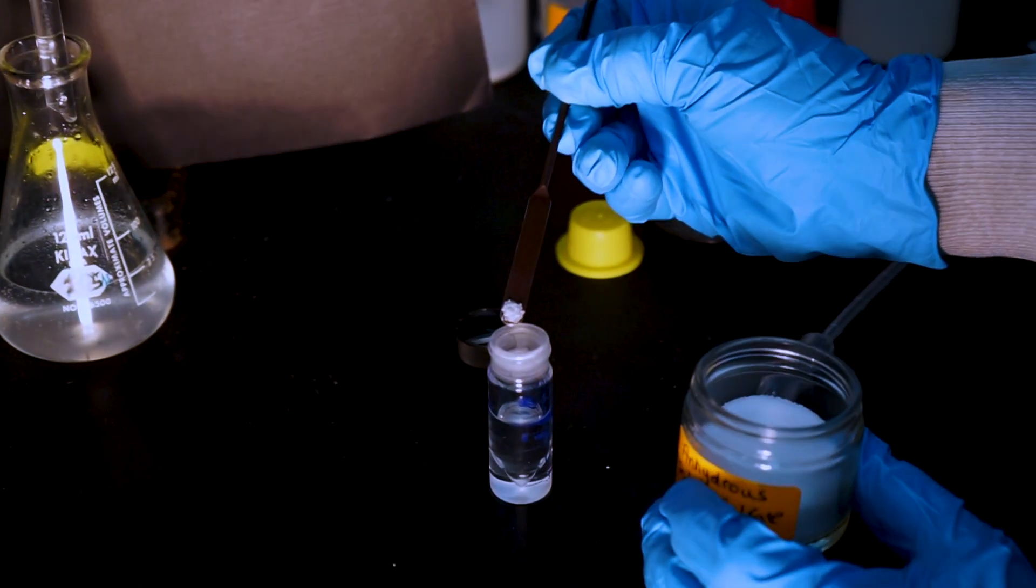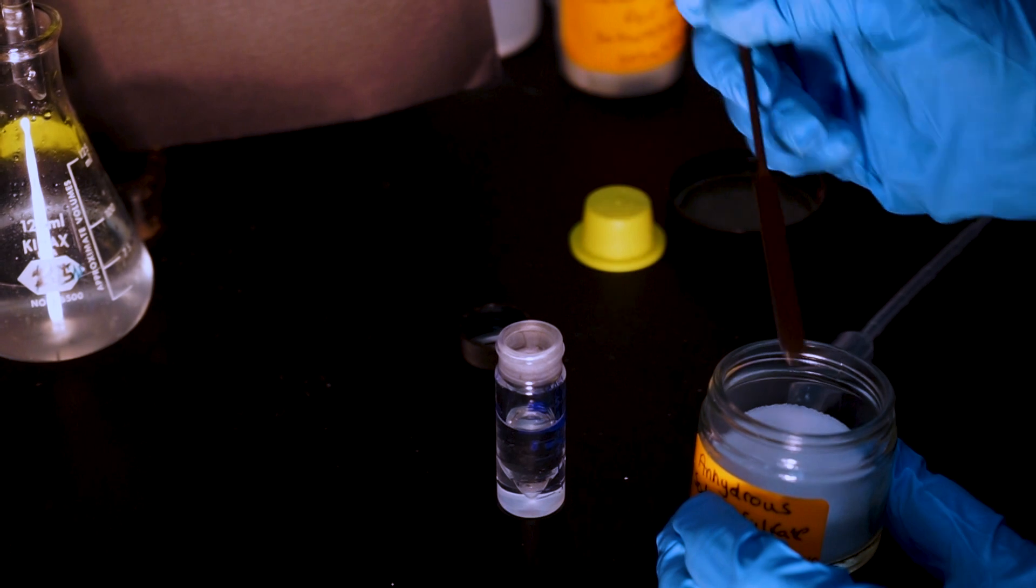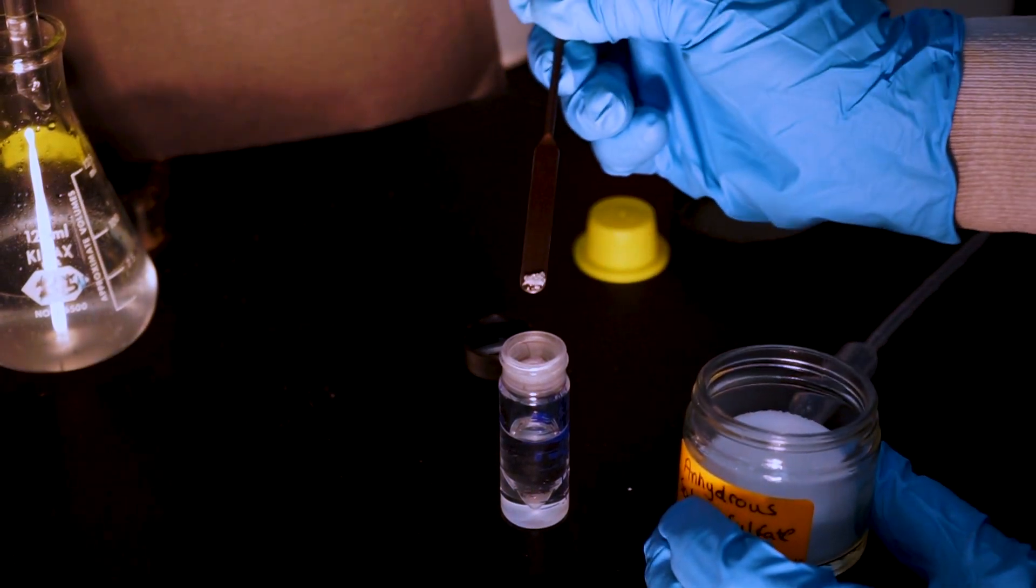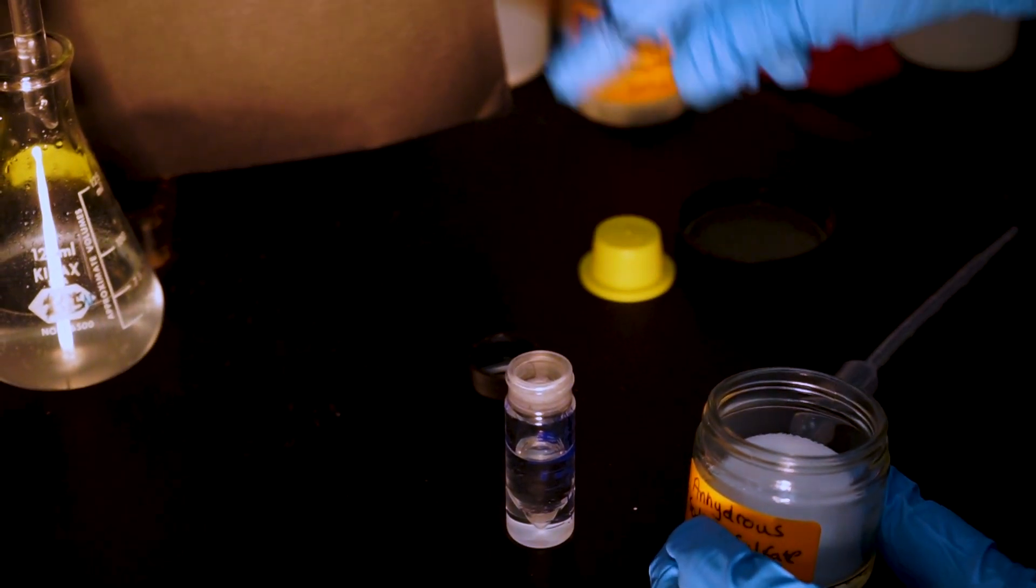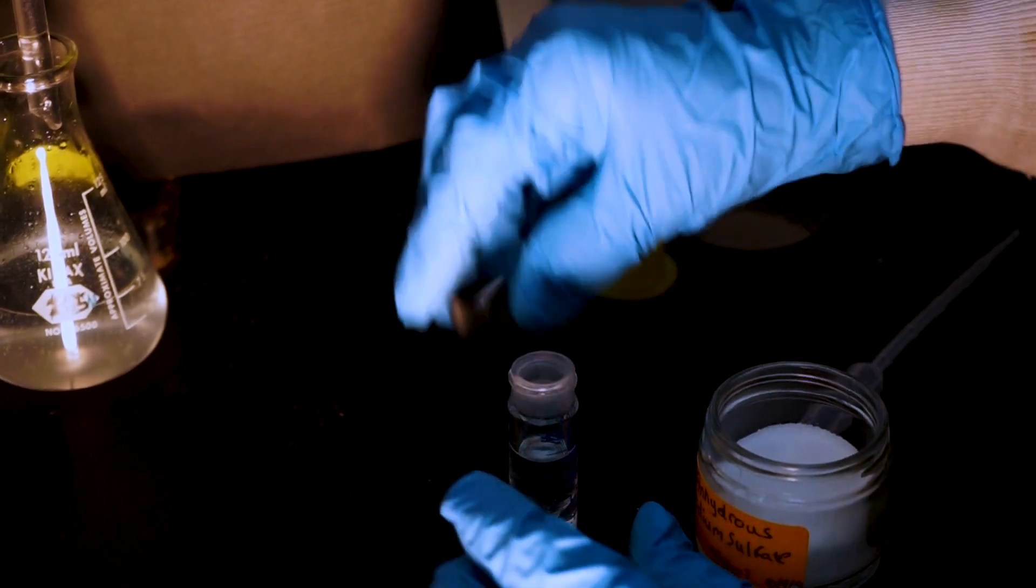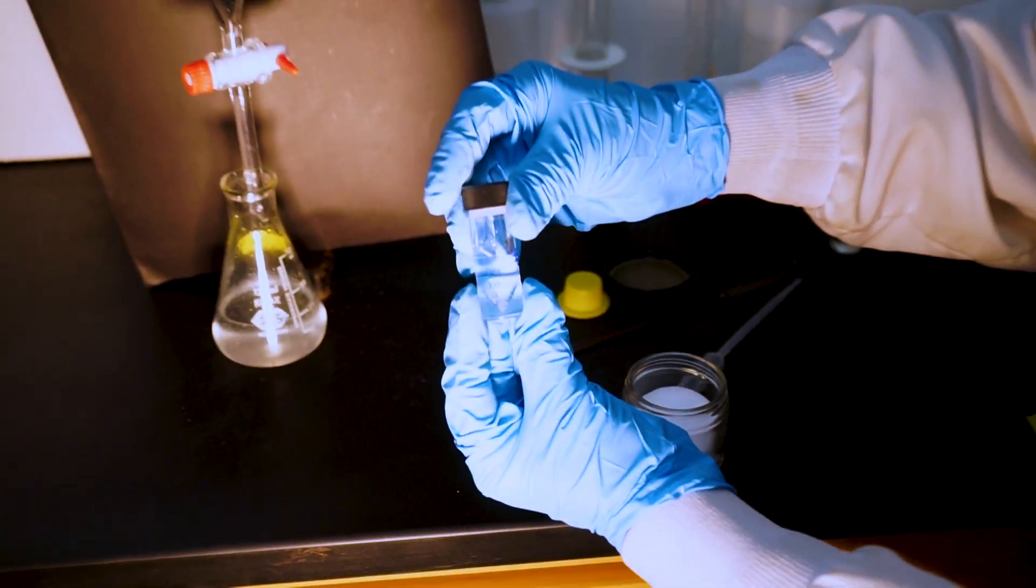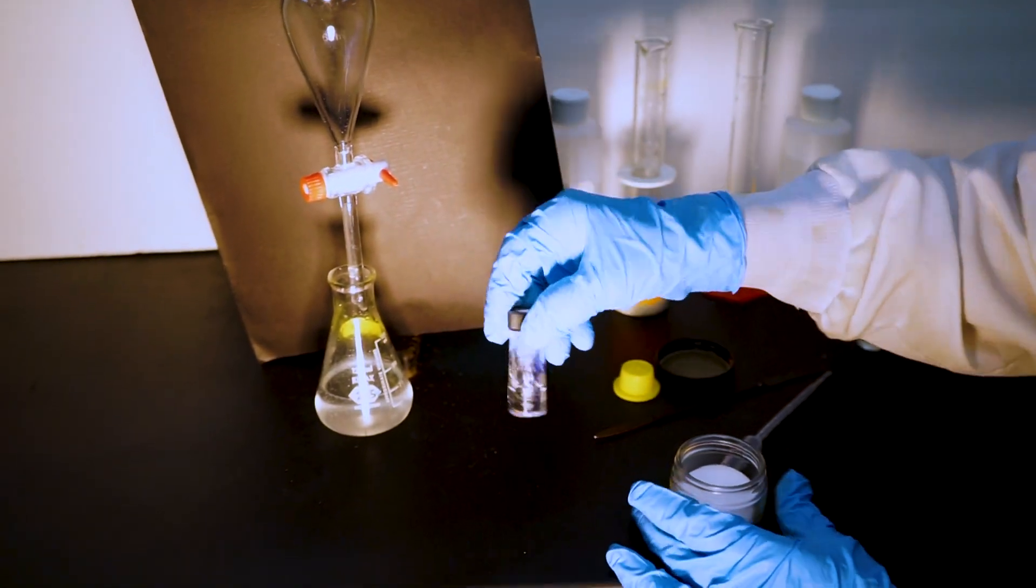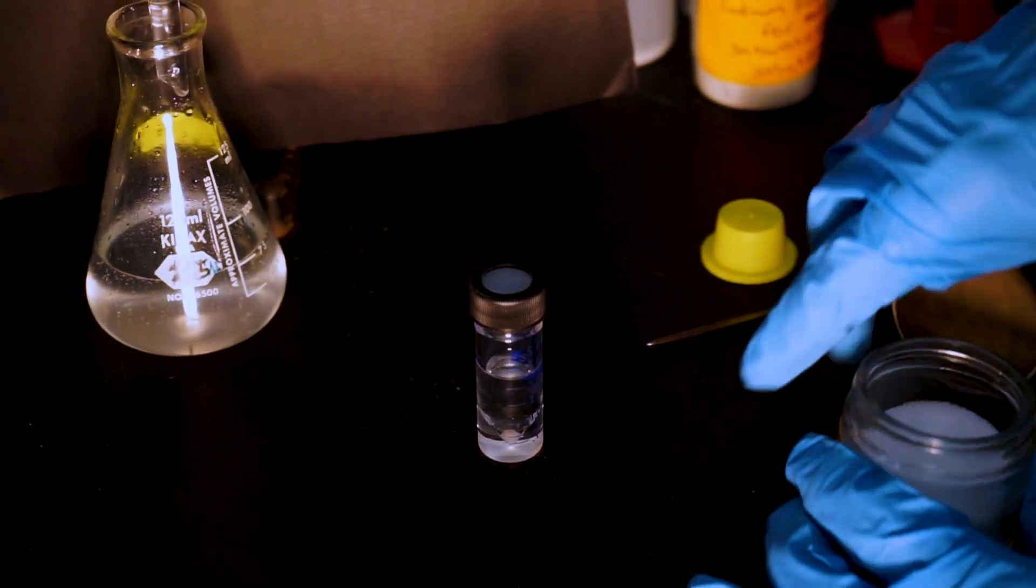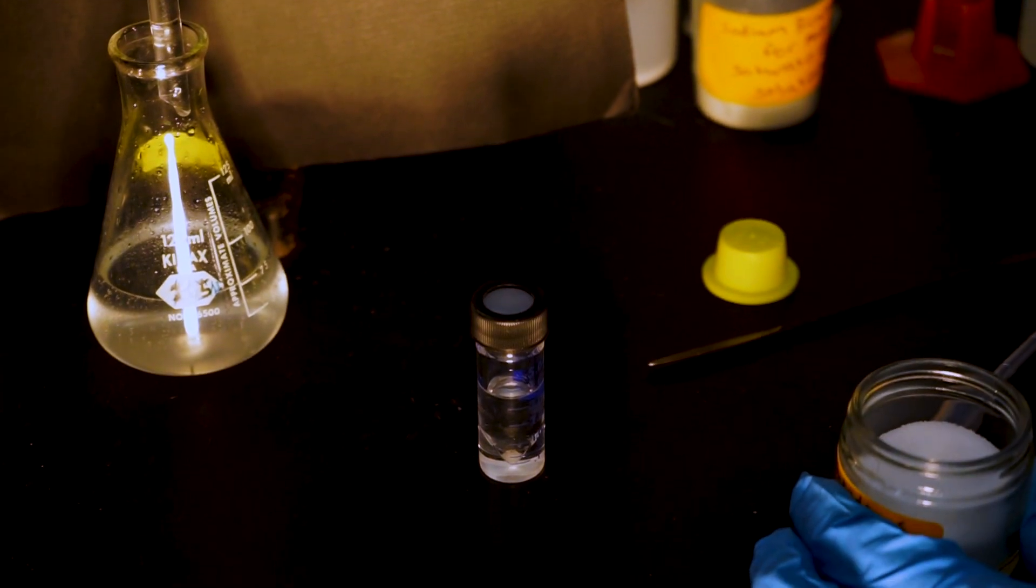Use a small amount of anhydrous sodium sulfate and shake the vial. When you see a few grains of the sodium sulfate floating around in the solution, you know you have added a sufficient amount. If it all sinks to the bottom and clumps up, and there's nothing easily floating around, you can add a second small amount.